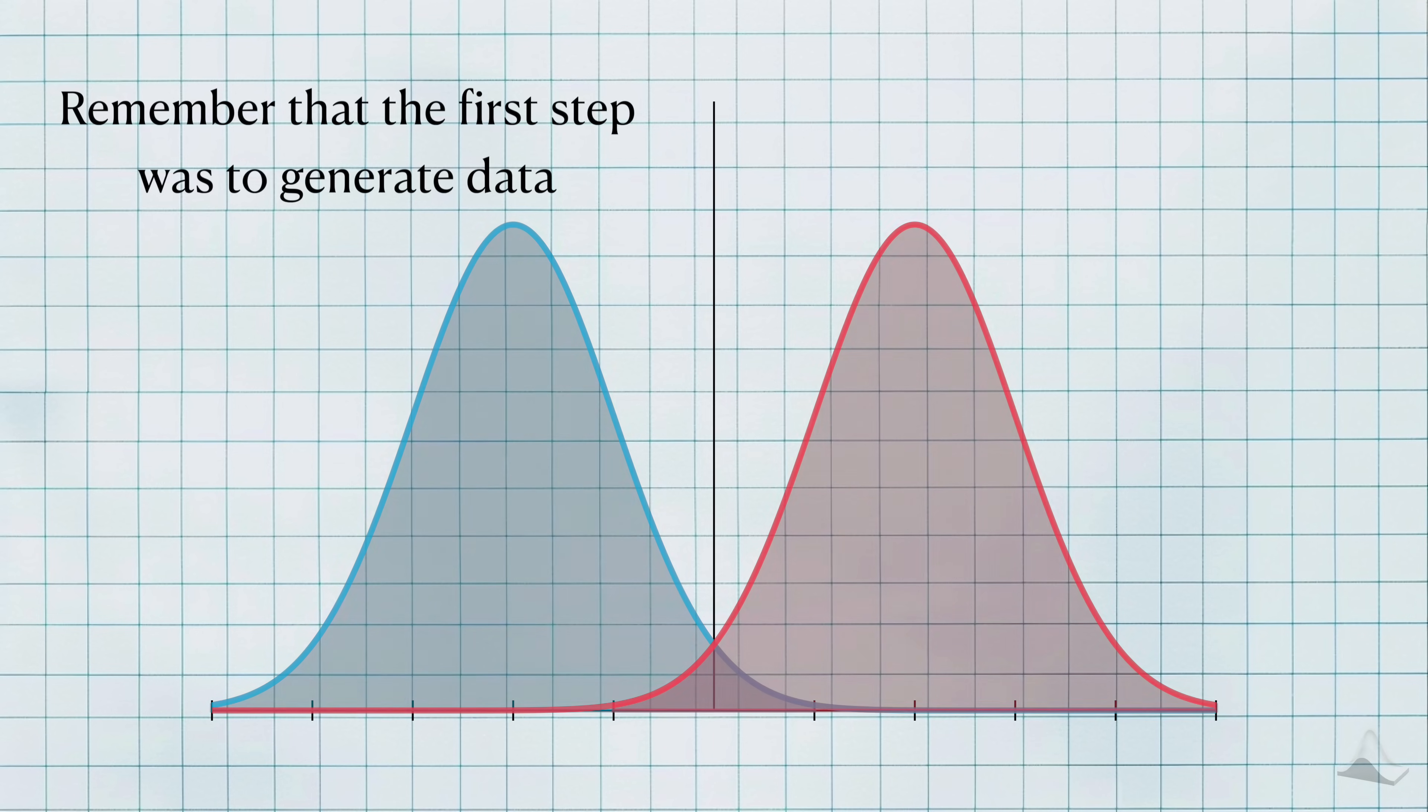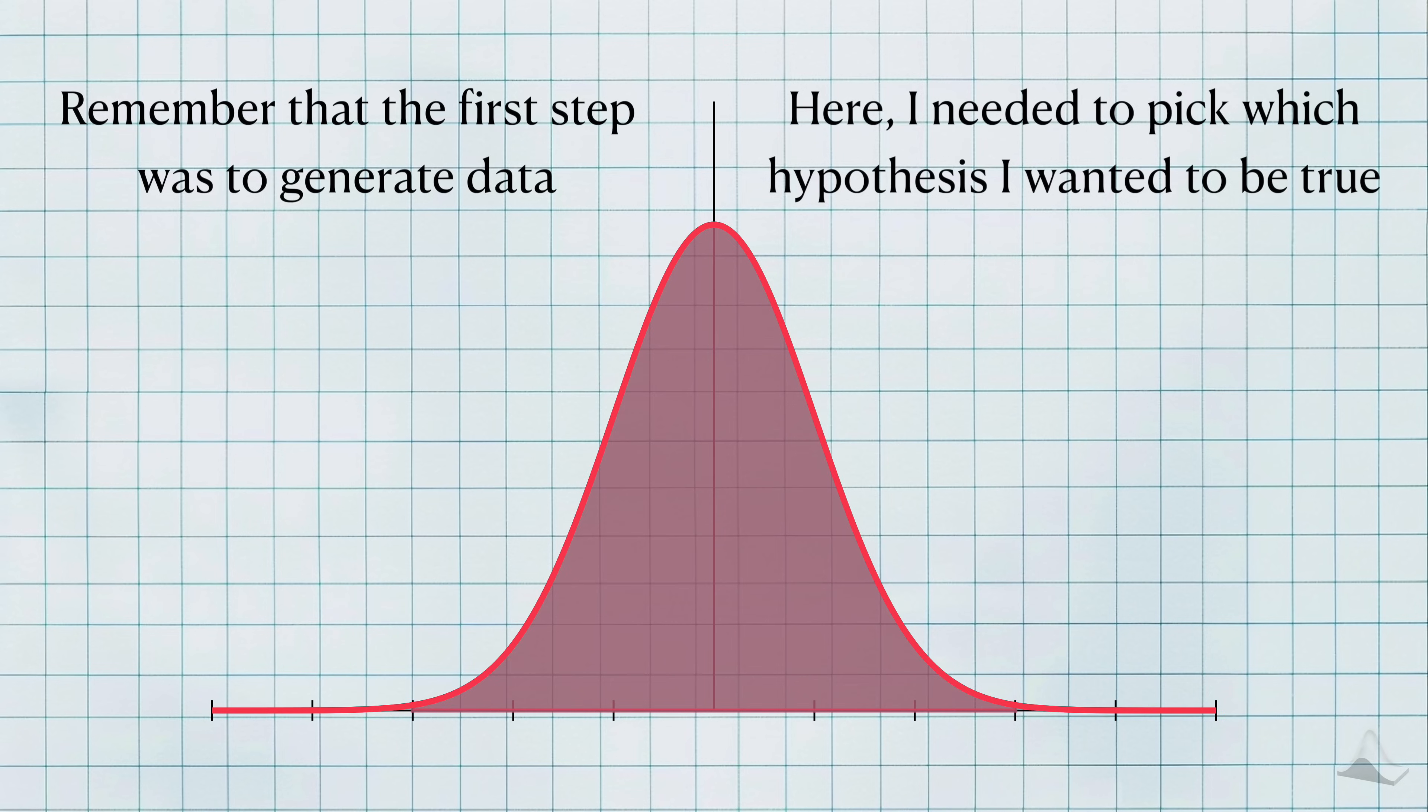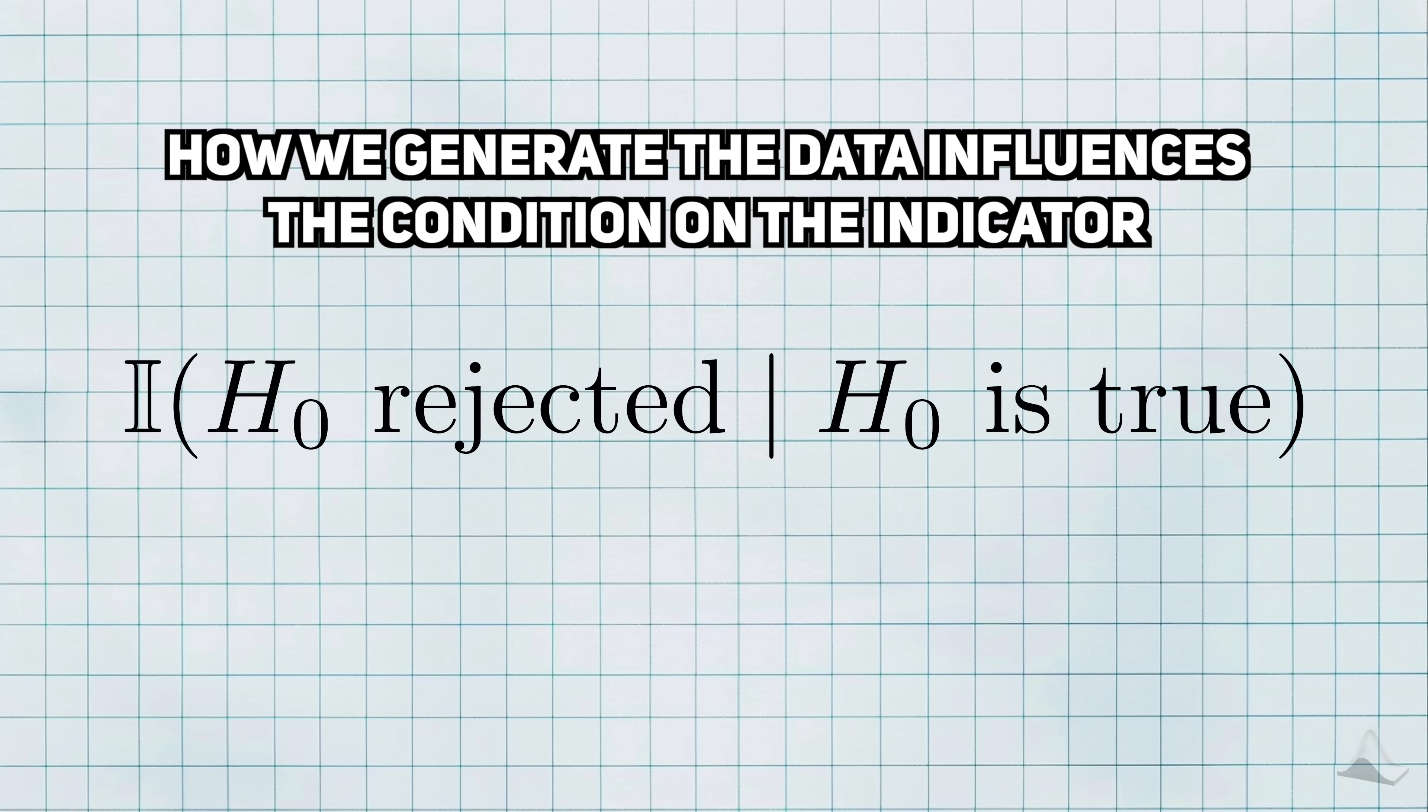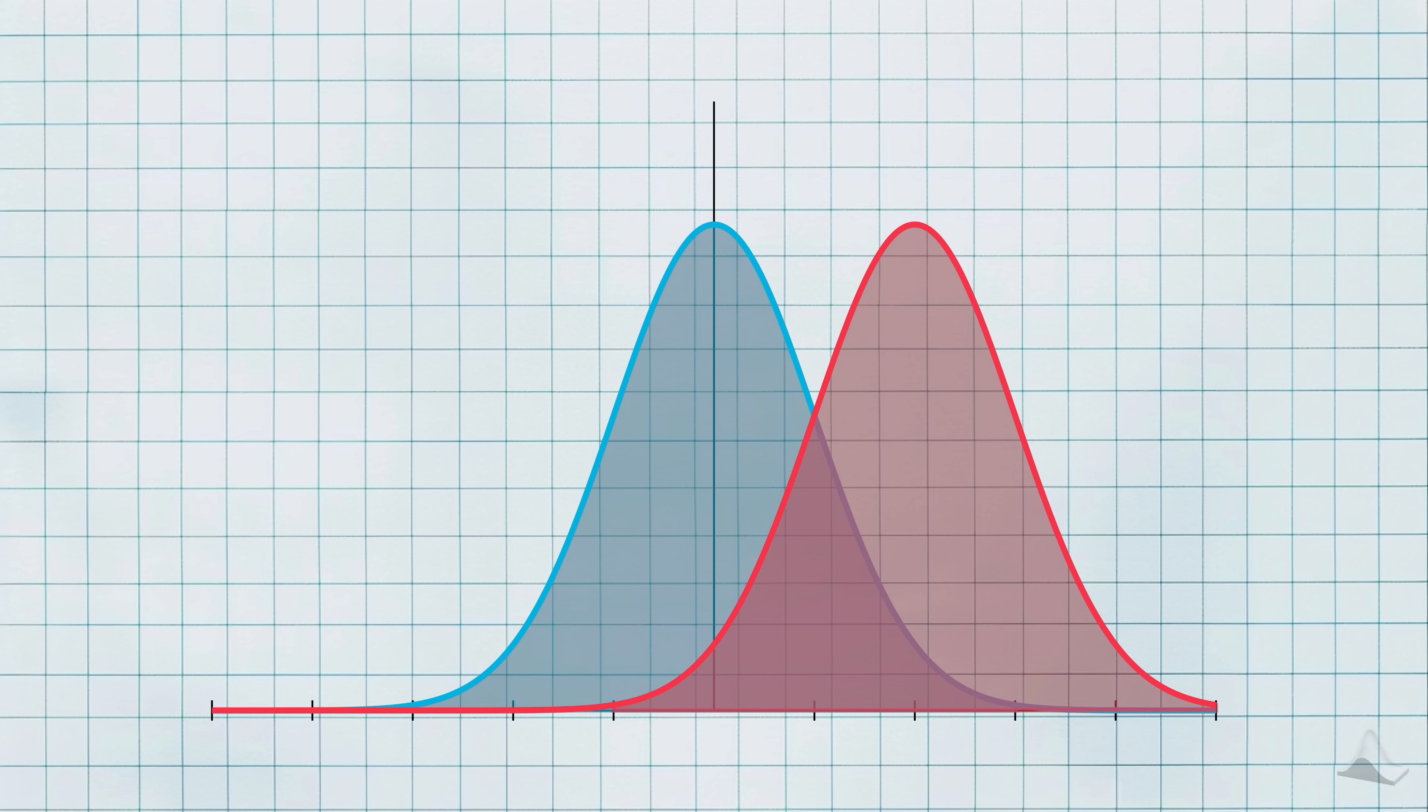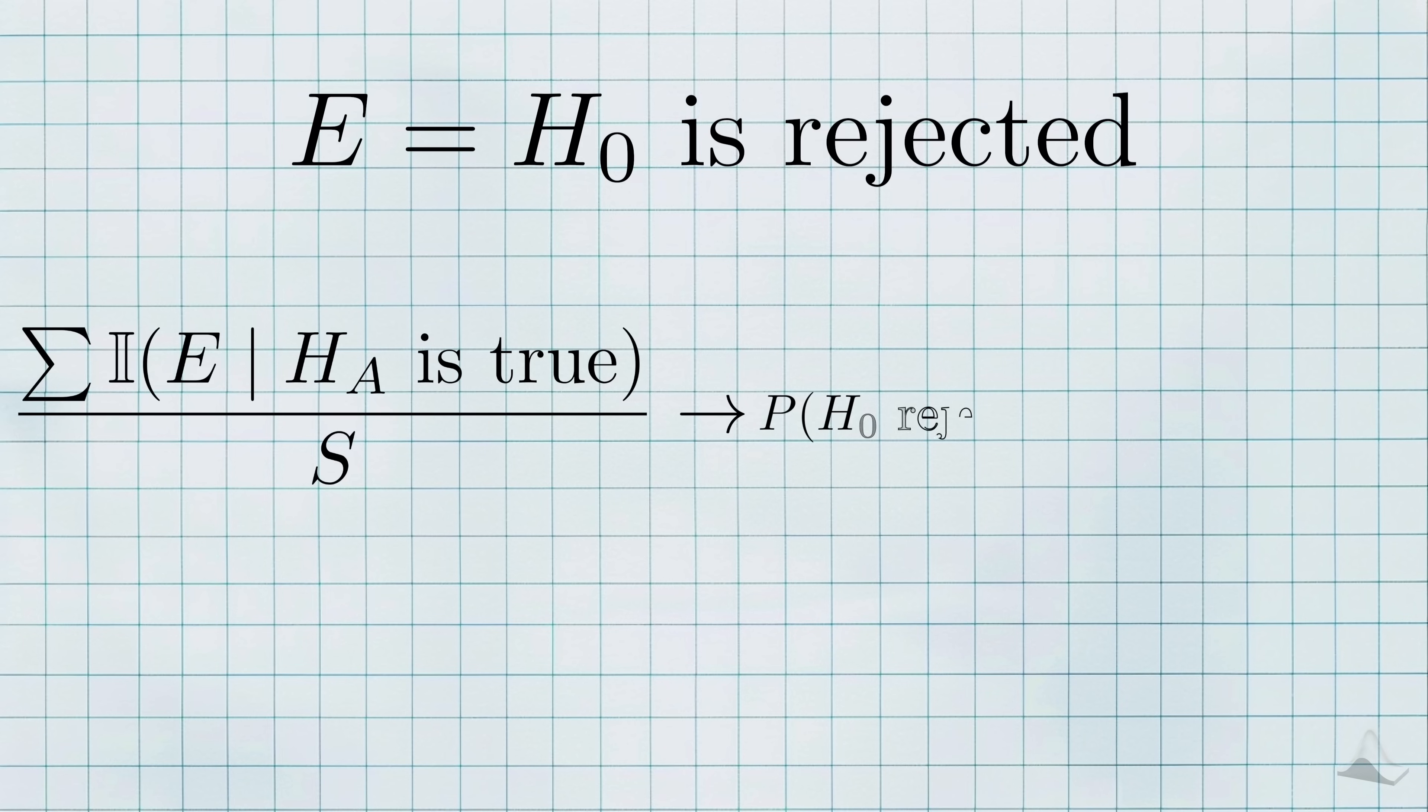Remember that the very first step was to generate data, and at that point I needed to choose which hypothesis I wanted to be true. When I generate data from a world where the null hypothesis is true, then the resulting indicator I record is also conditioned on the null hypothesis. With the law of large numbers, this proportion converges to the true conditional probability. You might recognize this as type 1 error. And as we'll see in the following examples, when the data comes from a specific alternative hypothesis, our sample proportion becomes an estimate for power instead.